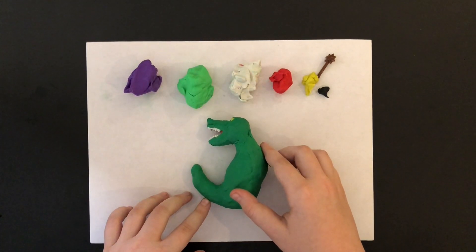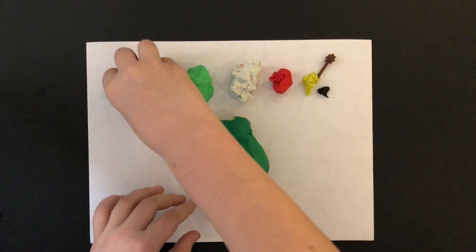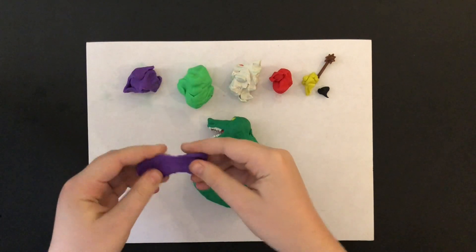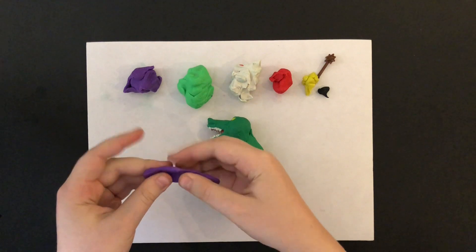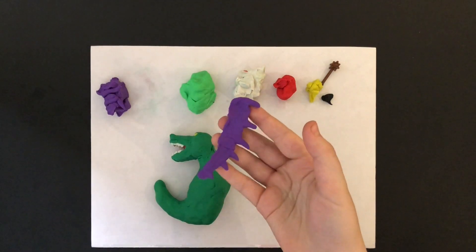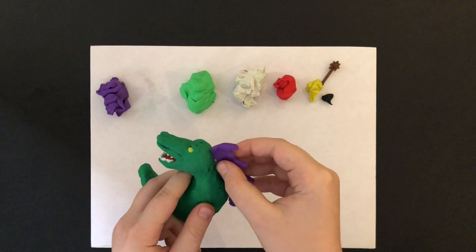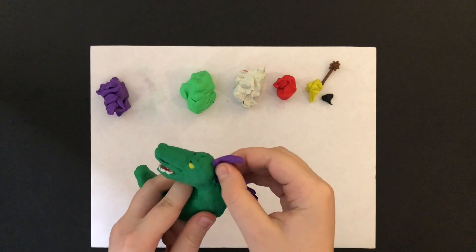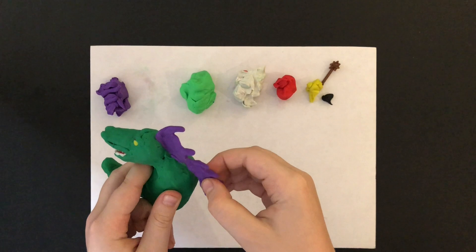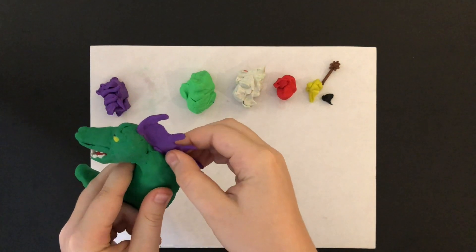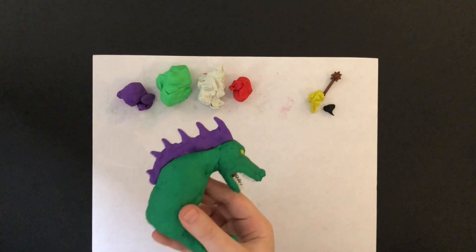The next part is the purple gills for the back. I grab a piece of purple clay and I flatten it. This is how your gills would look like. Next, I attach them to the body. First from the head, and then all the way until the end. There you have it.